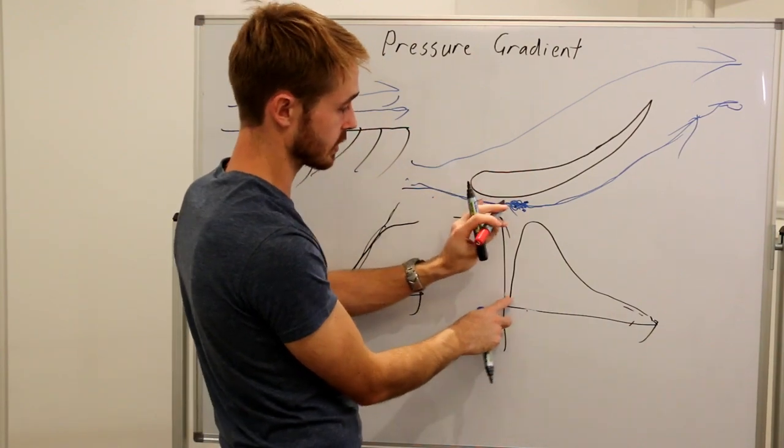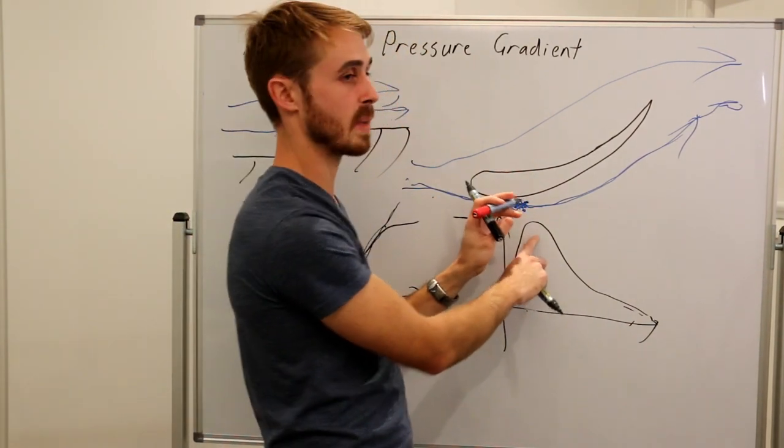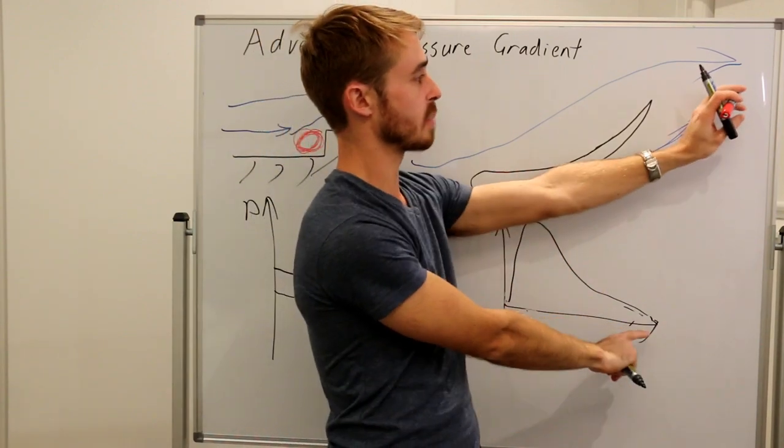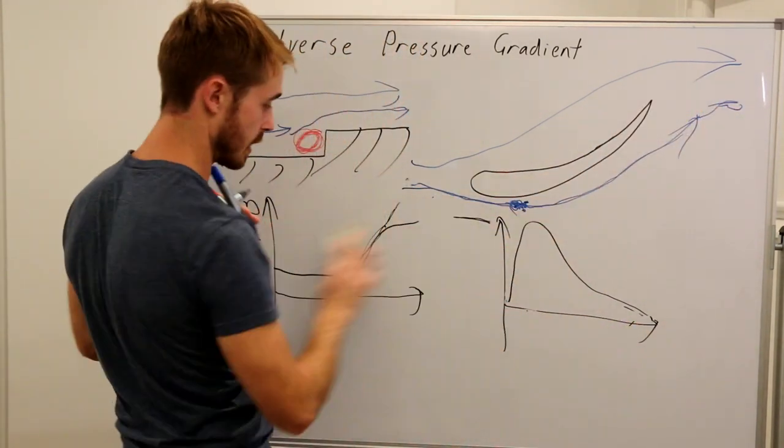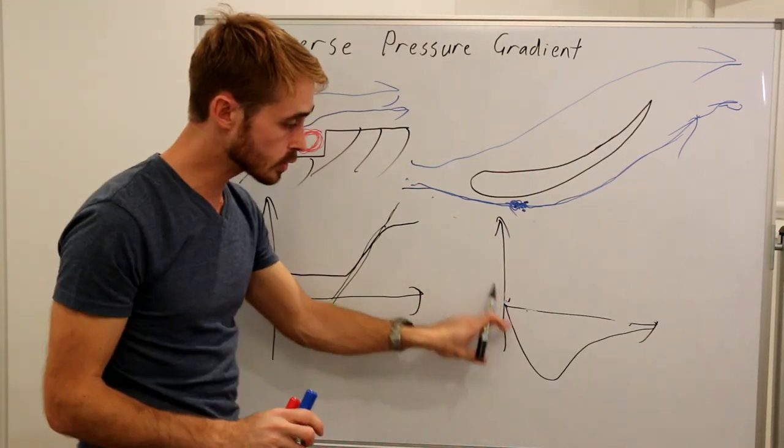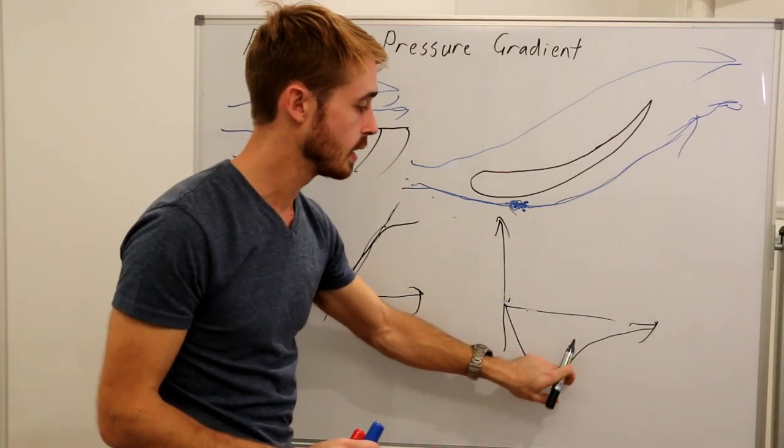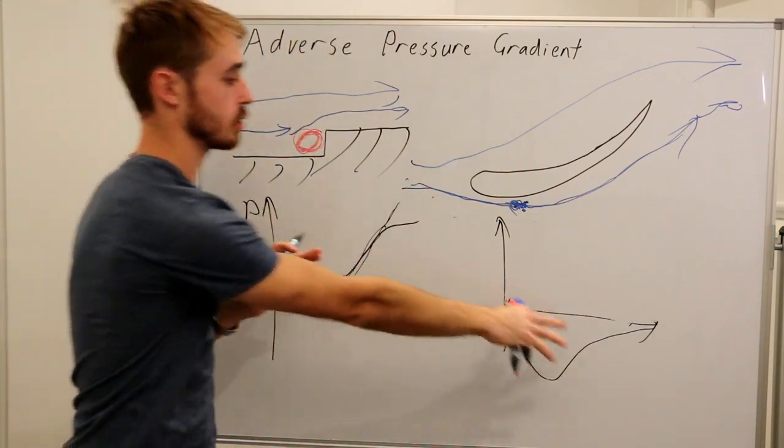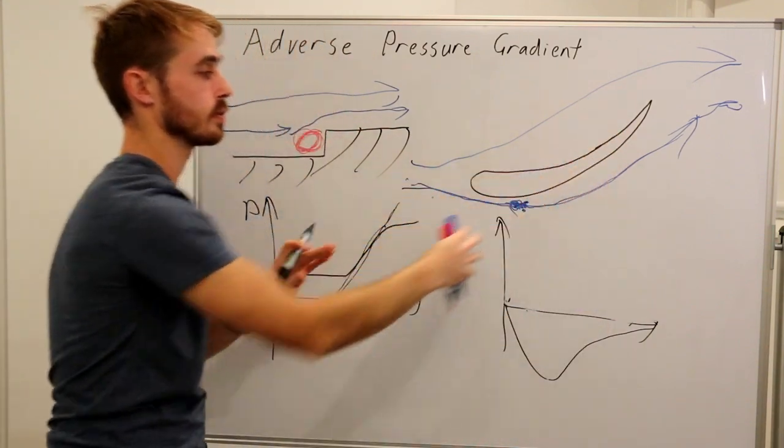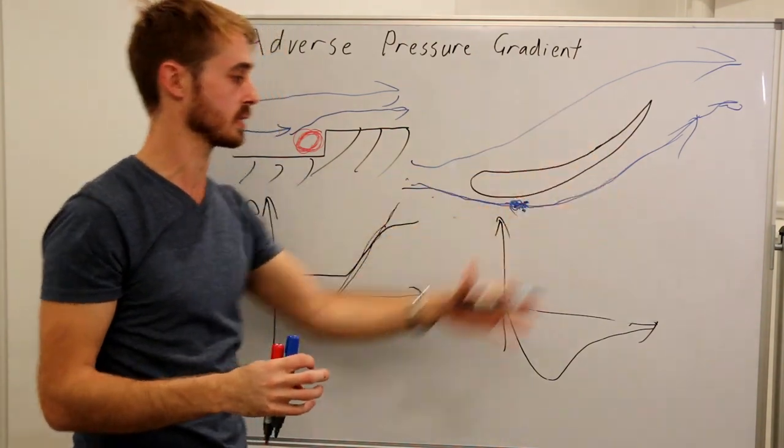So we can see that our pressure starts, let's say zero is our free stream reference, pressure starts at zero, increases to a negative peak or decreases to a negative peak, and then goes back to zero at the end of the domain. So let me redraw this in the same notation as this side. So we can see we hit a pressure peak here, then this is our positive pressure gradient along here.